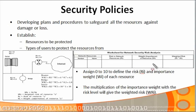It is also important to assign a couple of numbers to each resource. You can assign something called a Risk Importance factor, or RI. This RI is on a scale of 0 to 10 and determines how much risk you think this resource carries — 10 being maximum risk and 0 being no risk.